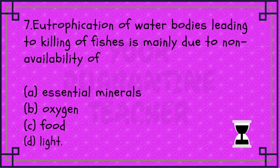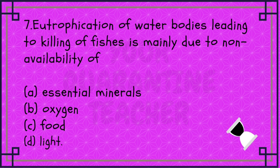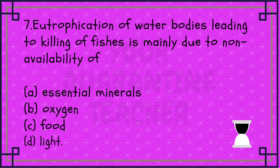Next: Eutrophication of water bodies leading to killing of fishes is mainly due to the non-availability of? So what is Eutrophication? It is the excessive growth of algae, plants and animals in the water bodies, due to nutrient enrichment, particularly with nitrogen and phosphate.